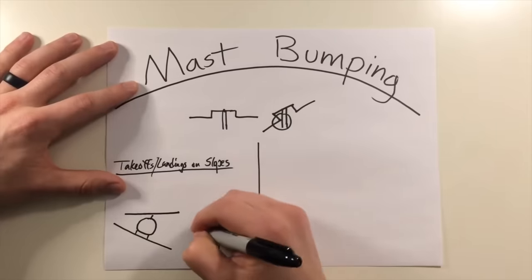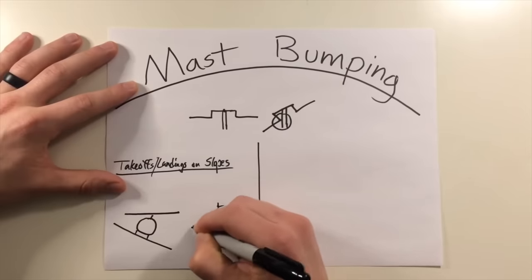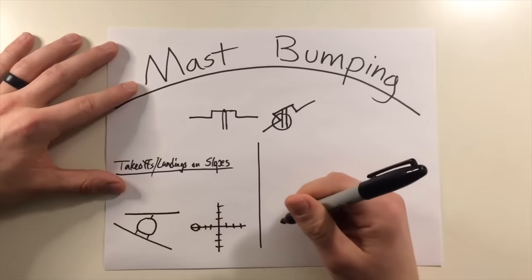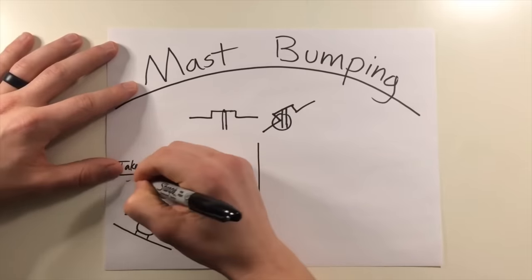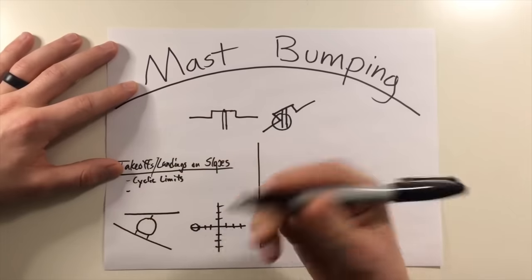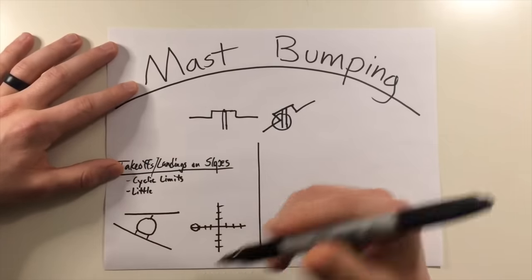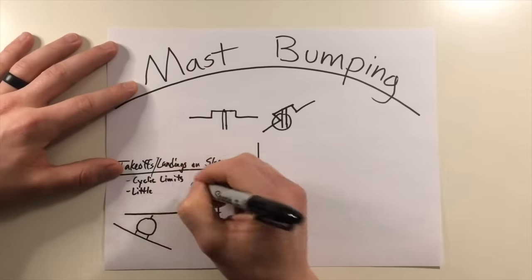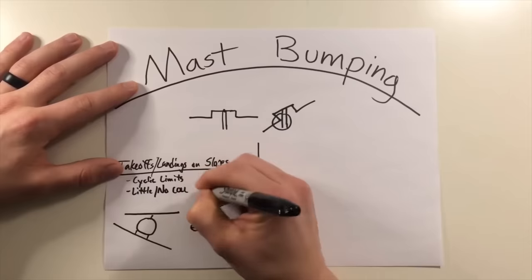Typically if this is the freedom of movement of your cyclic in any direction if you're getting to a point where your cyclic is all the way in one direction and you're trying to land on a slope or take off from a slope you may find yourself getting into some kind of mast bumping. Now this is probably one of the more common conditions. You're getting to cyclic limits it's really not going to be too severe because you can make corrective action for it by either choosing a different place to land or applying a little bit more power prior to displacing your cyclic but you're getting to your cyclic limits with little or no collective applied.